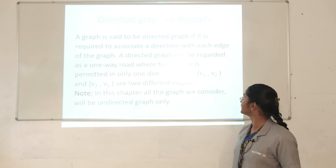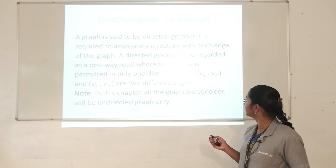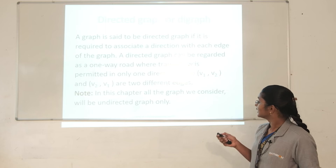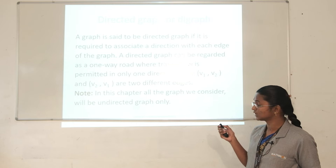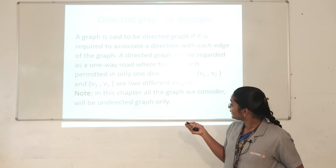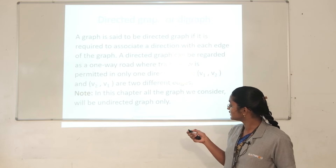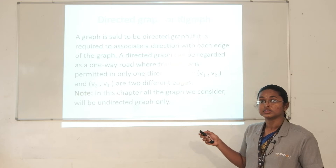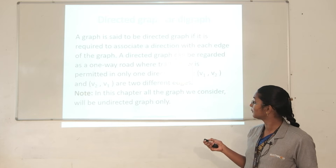A directed graph can be regarded as a one-way road where traffic flow is permitted only in one direction. In this case, (V1, V2) is an edge beginning at V1 and ending at V2. But it is different from (V2, V1), where V2 is the starting point and V1 is the ending point. So (V1, V2) and (V2, V1) are completely different.